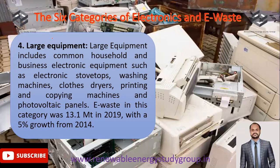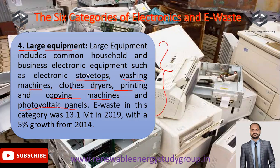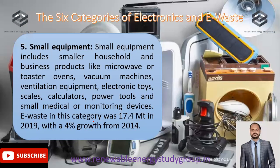The fourth category is large equipment. This consists of most equipment used in the residential and business sectors, such as stovetops, washing machines, cloth dryers, printing and copier machines, Xerox machines, and photovoltaic panels — a generalized category for large equipment not included in any other category. This waste was 13.1 metric tons in 2019, with a 5% growth from 2014.